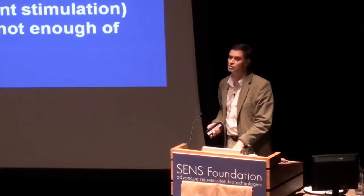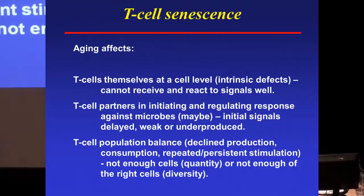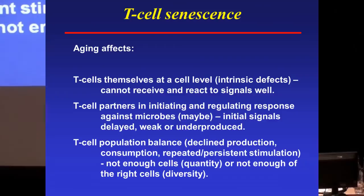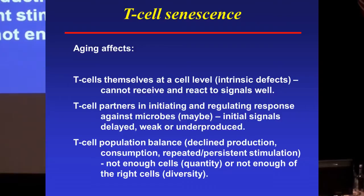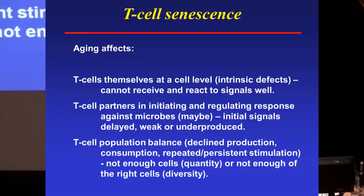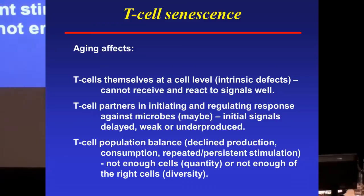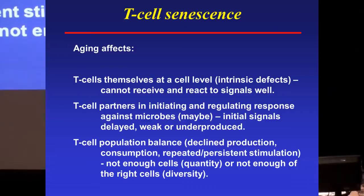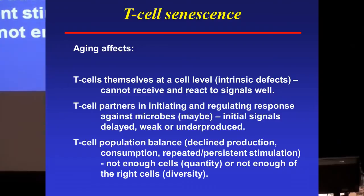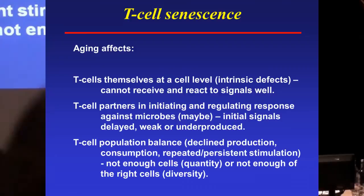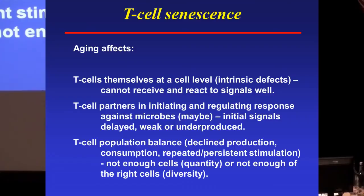The things that go wrong with T cells can occur at three different levels. One is cell-intrinsic problems — if you pull out T cells from an older individual and ask them to respond to a stimulus, they will not proliferate as well, will not produce cytokines as well, and will not form signaling complexes at the membrane — the immunological synapse — as well as those from younger individuals. Another problem is that T cell partners initiating and regulating the response might not work quite as well; multiple mechanisms involving cellular partners and soluble molecules may deliver signals that are delayed, weak, or underproduced.